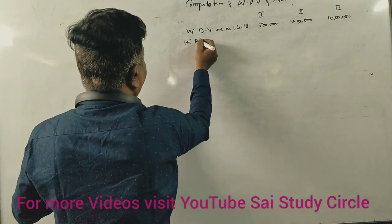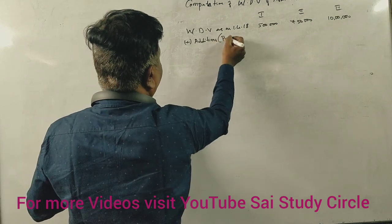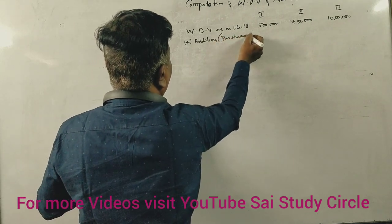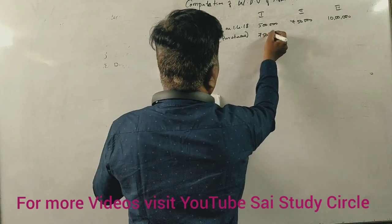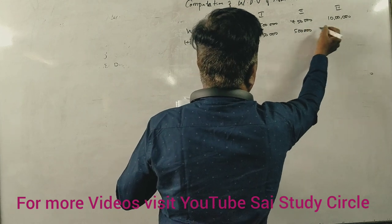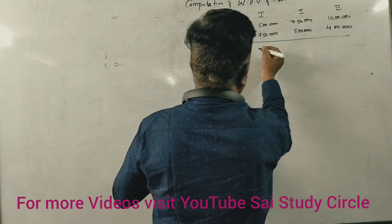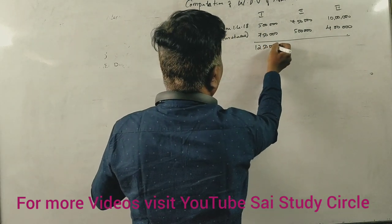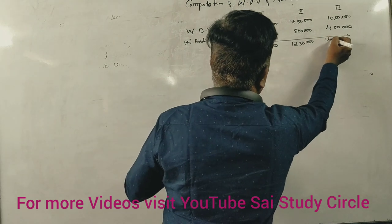Now additions, purchases. 7 lakhs 50 thousand, 5 lakhs, 4 lakhs. Now check the totals of this. This is 12 lakhs 50 thousand. This is 12 lakhs 50 thousand. This is 14 lakhs.